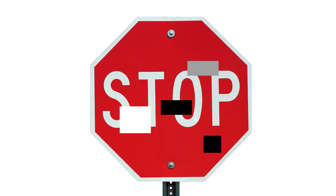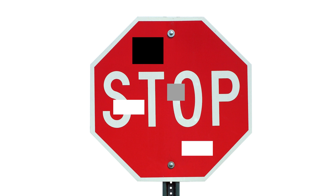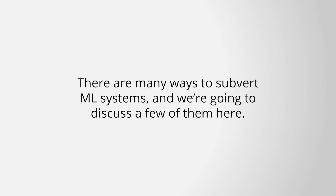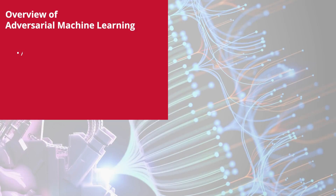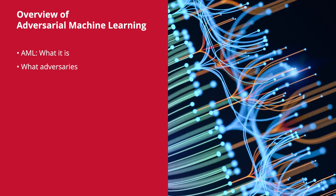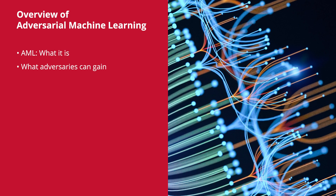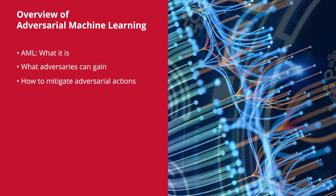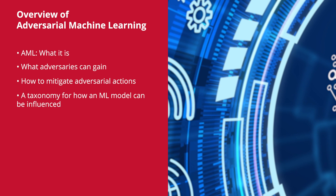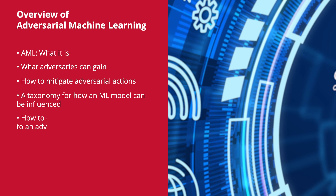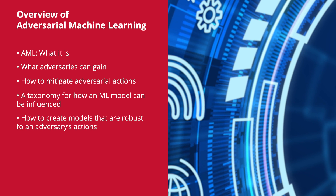This simple act of adding stickers is one form of adversarial attack to machine learning systems. There are many ways to subvert ML systems, and we're going to discuss a few of them here. First, we will discuss what adversarial machine learning is, then examine concepts behind what adversaries look to gain, what researchers are doing to mitigate these adversarial actions, a basic taxonomy of how a machine learning model can be influenced, and how to create models that are robust to an adversary's actions.